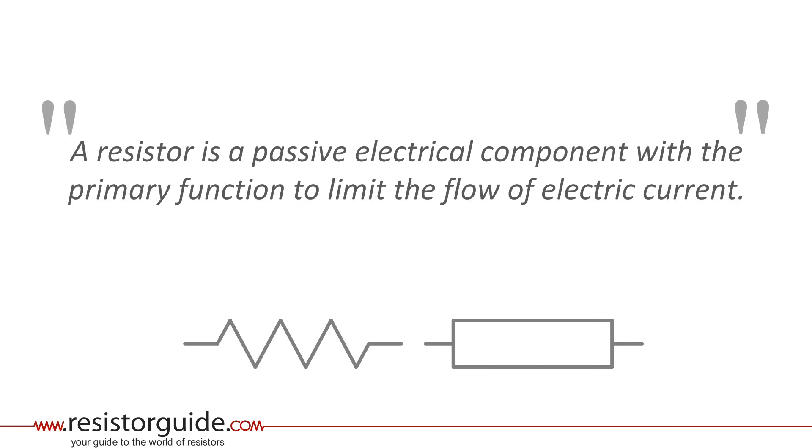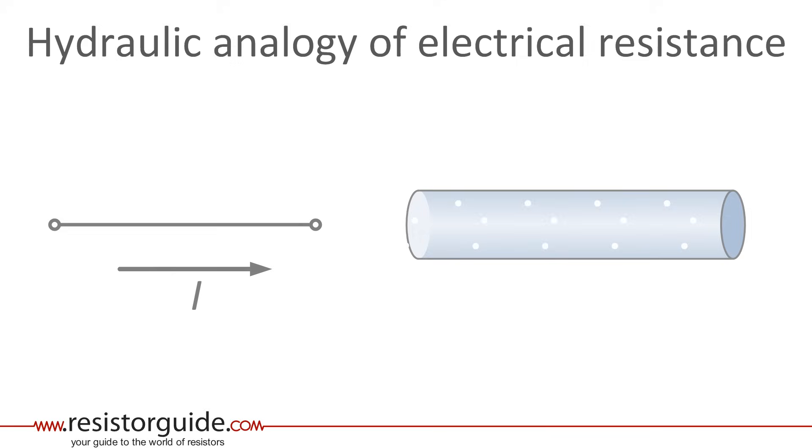To explain the definition more clearly, we use the example of water that flows through a tube. The flow of water is similar to the electrical current in an electrical circuit. The pressure difference that causes the water to flow can be compared to a voltage difference which causes the flow of electrical current.